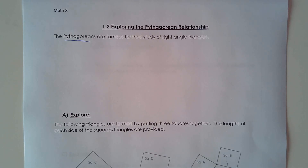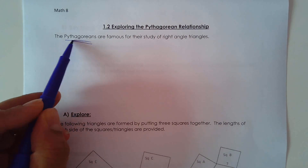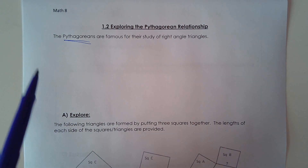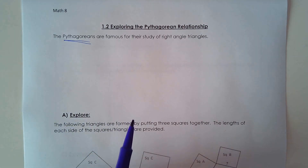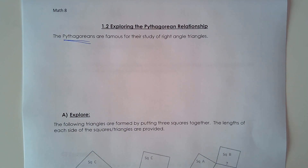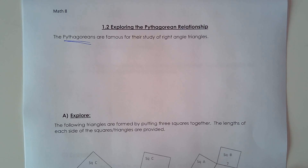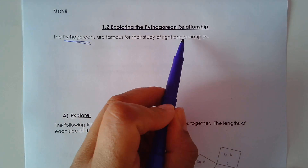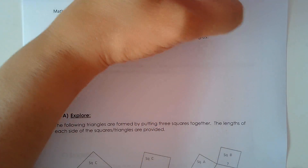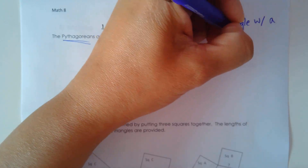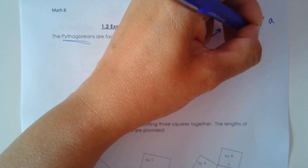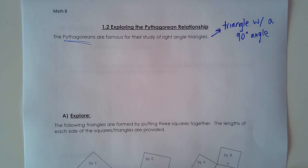So today we're focusing on section 1.2, exploring the Pythagorean relationship. The Pythagoreans are famous for their study of right-angled triangles. This is a group of Greek mathematicians, and what they discovered was relationships between side lengths in right-angled triangles. A right-angled triangle is a triangle with a 90-degree angle.